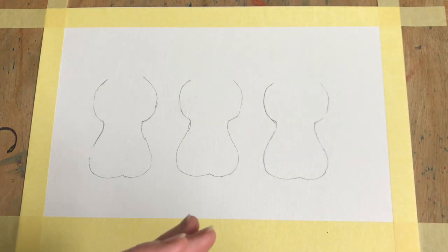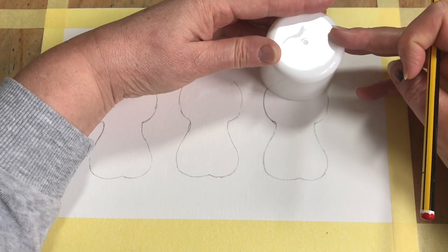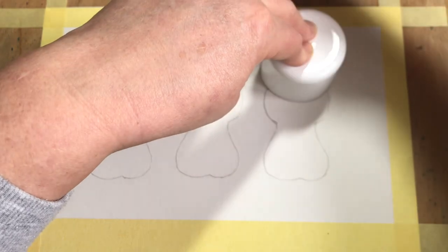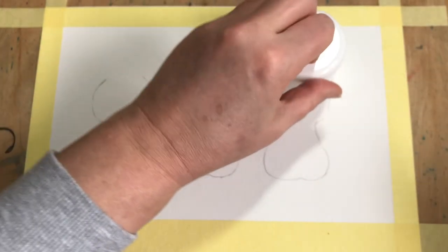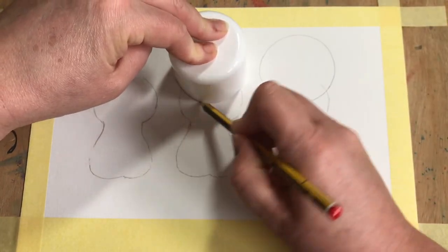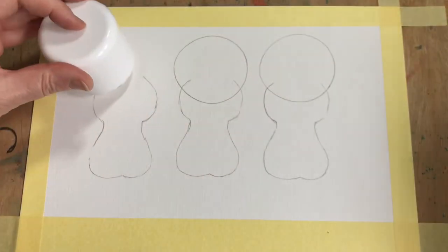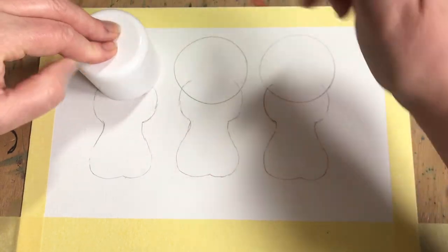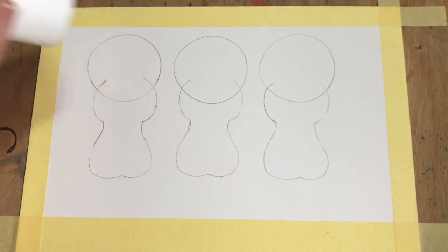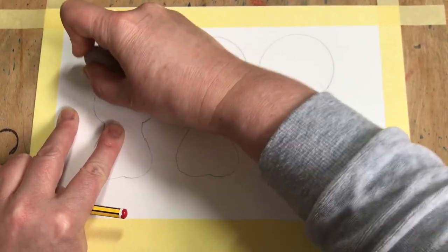Once you've got your ladies in position, you can then pop on the hats. You just want the hats coming just over the top of the shoulders, and then just drawing around your lid. You've got one hat. I'm going to just position the second one. Two, and then the third. Three. And then we'll just take away those shoulder lines that are coming into the hat.